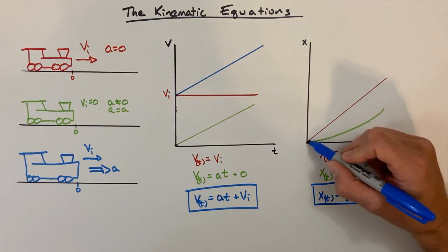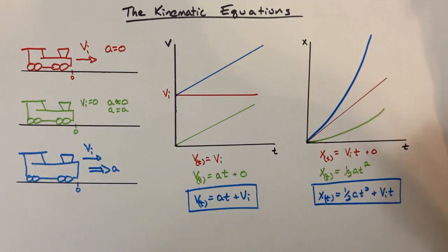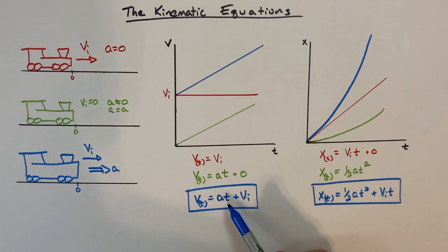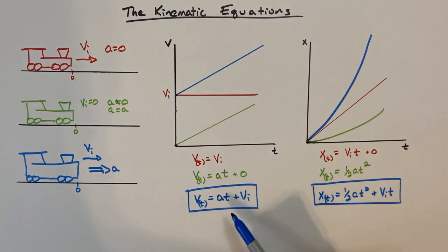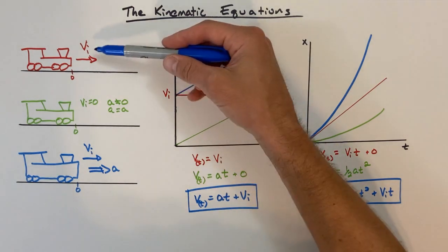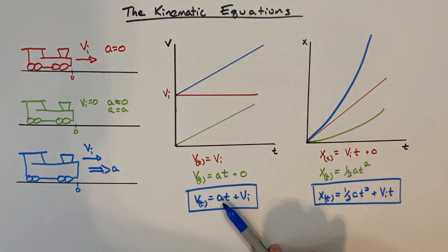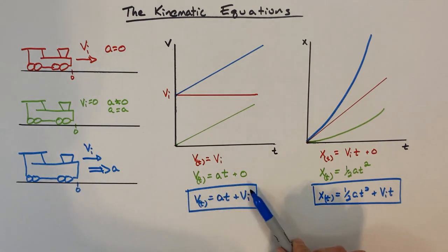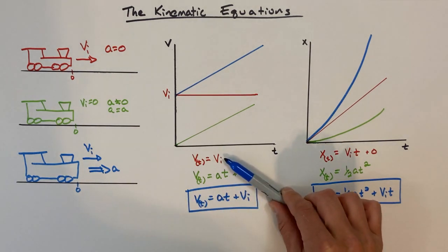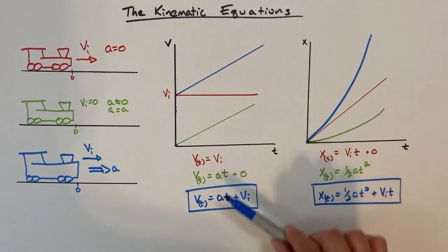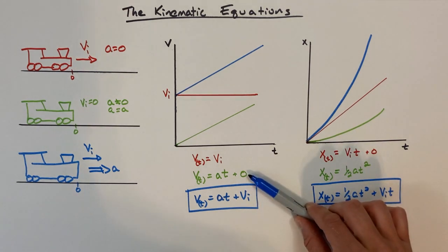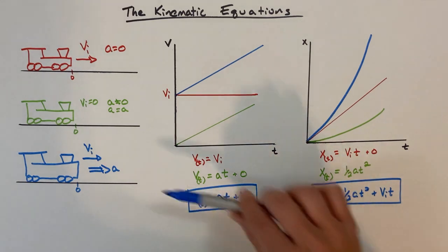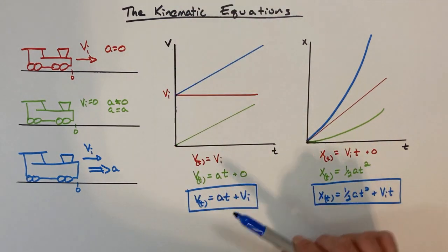Going back to math class, this is the slope-intercept expression for this line. On our position versus time graph, our position versus time is going to be expressed by one-half at squared plus vi·t. This equation would look like a parabola that starts with an initial slope and grows steeper as time goes on. Now, this equation can be used to describe any of these three situations. For example, in the first situation when acceleration was zero, if you plug in a value of zero, this entire equation reduces down to our initial equation for the red train. If you plug in an initial velocity of zero, this reduces down to the equation for the green train.